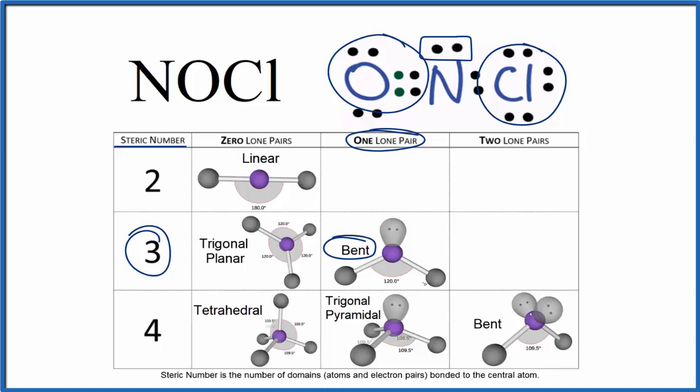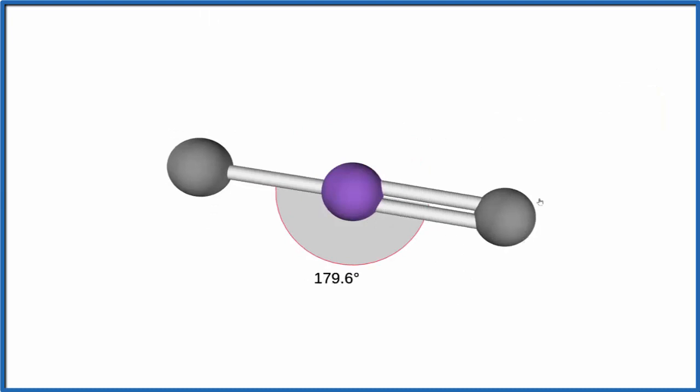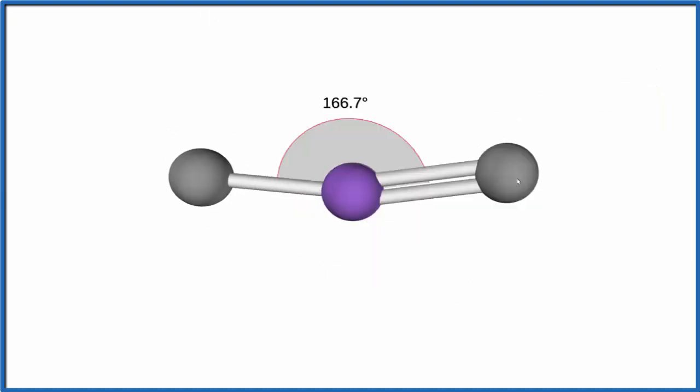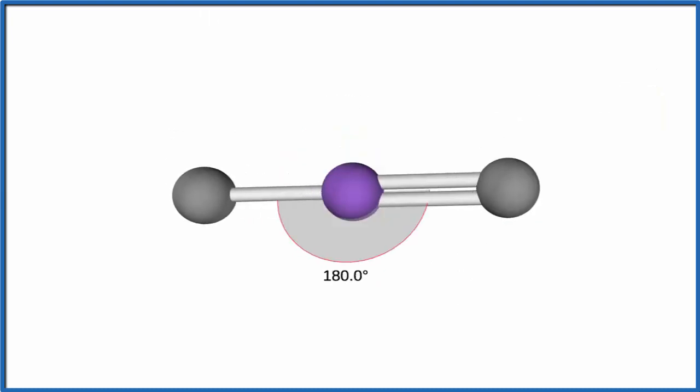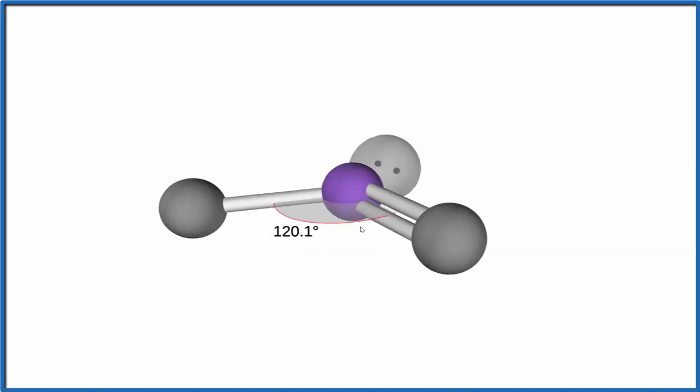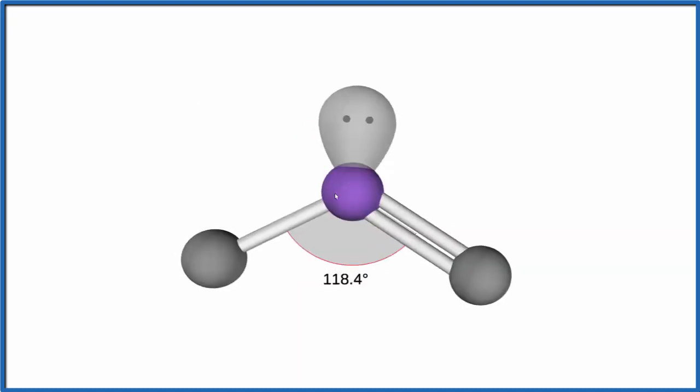Let's visualize the molecular geometry or shape here for NOCl. So the purple, that'll be the central nitrogen atom. We have the double bonded oxygen and then we have the chlorine. So they spread out to be as far away as they can from each other but we still have that lone pair. So we put this lone pair on and it occupies space and it pushes down both of these atoms, the chlorine and the oxygen. That gives us a bent molecular geometry.